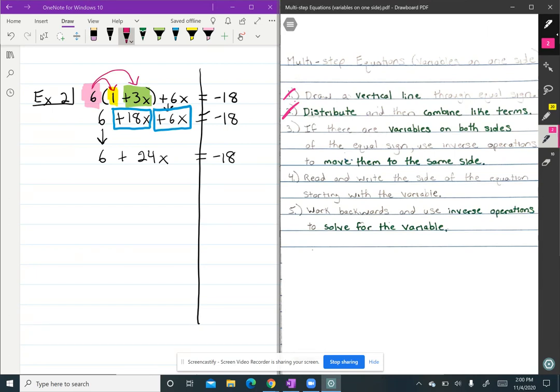Step three is if we have variables on both sides, which we don't. We only have a variable on the left, so I can cross that step out.